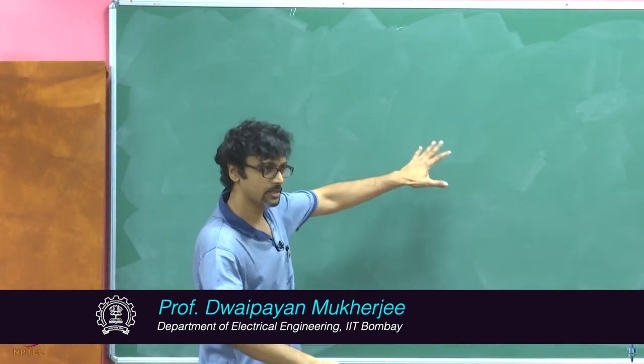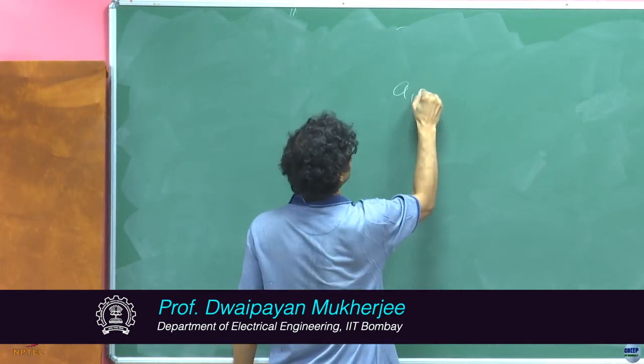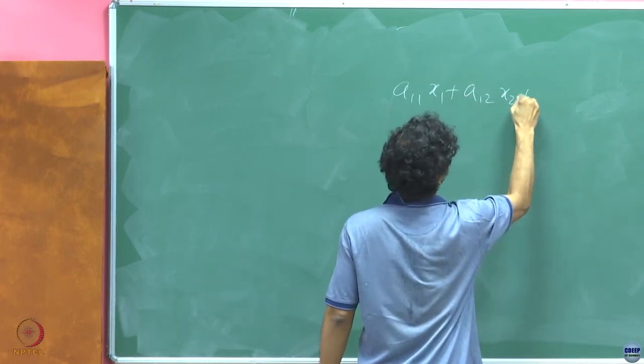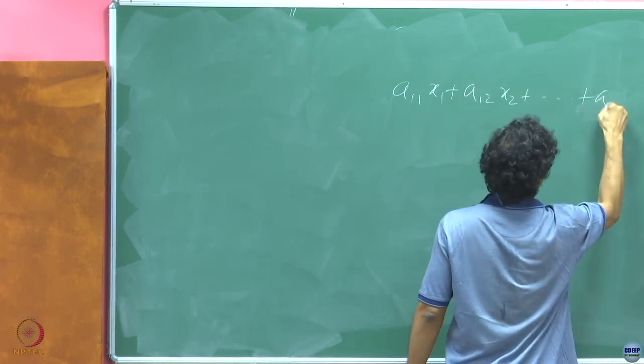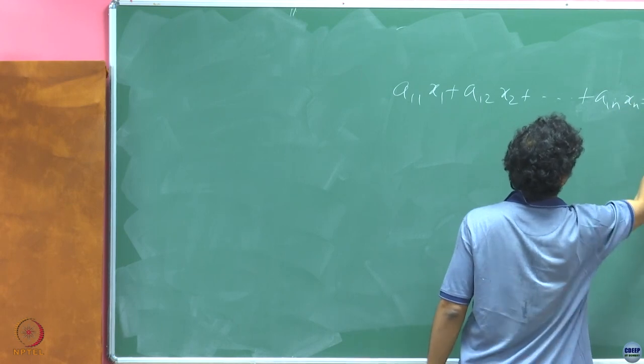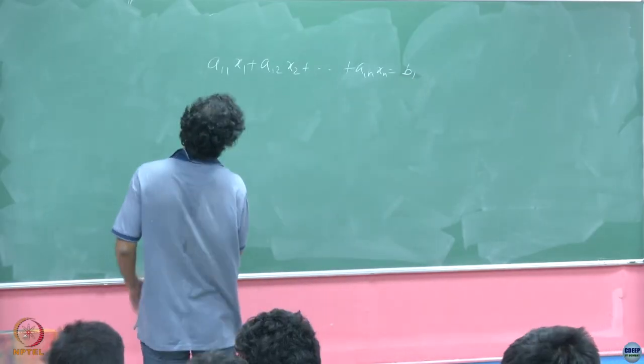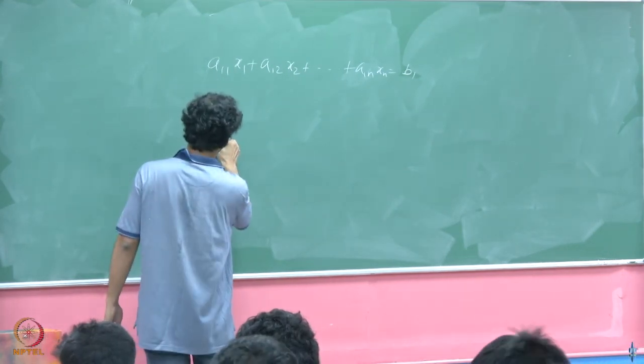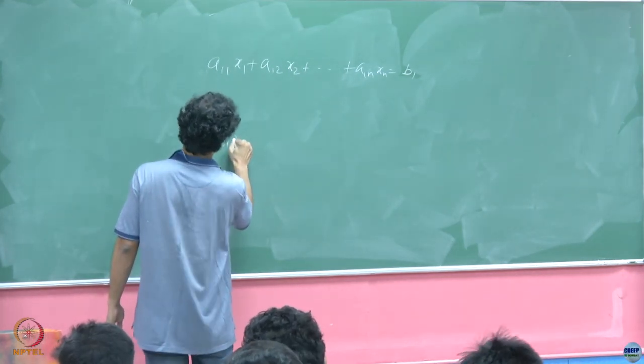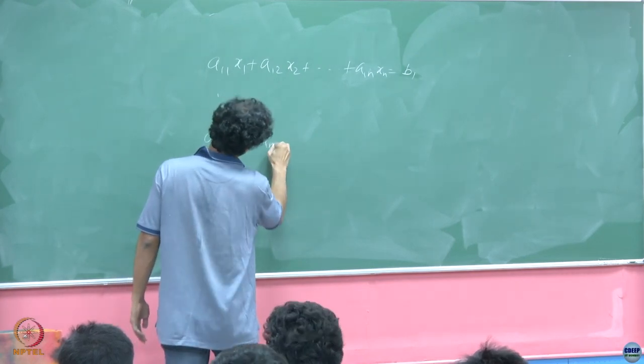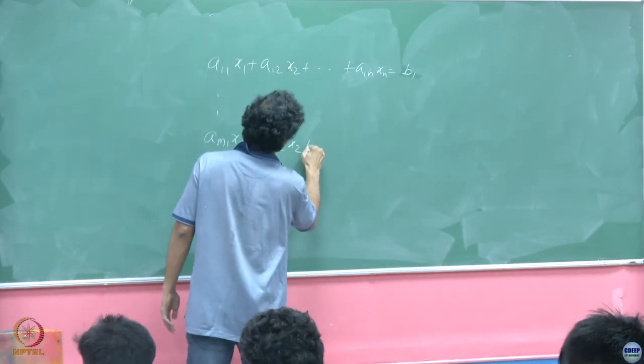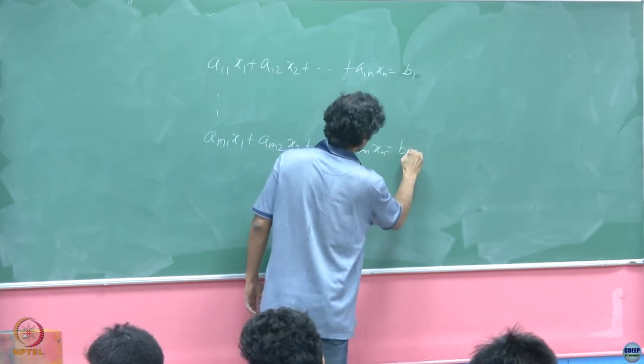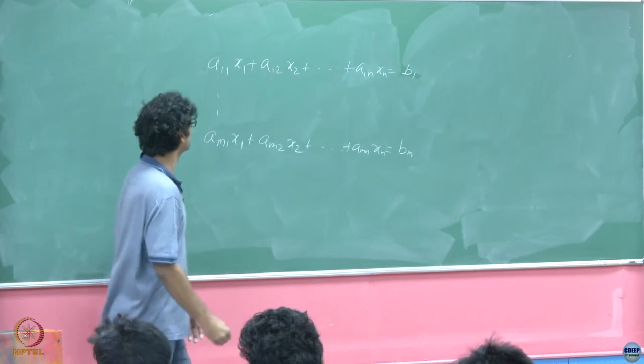Let me again write that down elaborately. a_11 x_1 plus a_12 x_2 plus ... plus a_1n x_n is equal to b_1, and because I am lazy I am just going to write the last one now instead of the second one: a_m1 x_1 plus a_m2 x_2 plus ... plus a_mn x_n is equal to b_m.